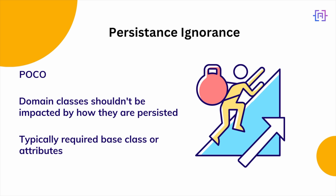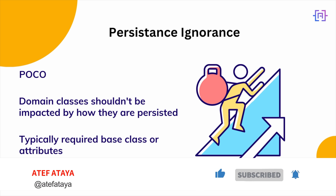Another principle we will apply is persistence ignorance. It ensures that domain classes are not influenced at all by the technology used to persist them. The domain we are modeling shouldn't be cluttered with things like base classes you need to inherit from or attributes you need to apply to properties. Applying this principle ensures the code isn't linked to any technology and gives you the freedom to store entities wherever you want — for example, first in a cache and then in the database. They are just plain objects.